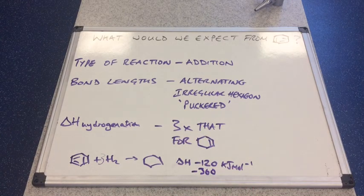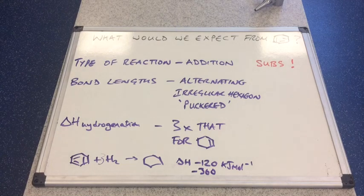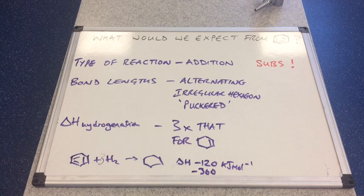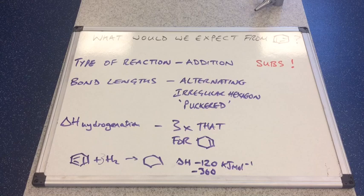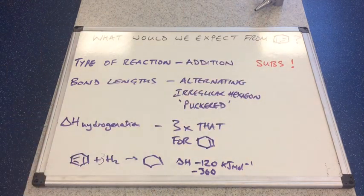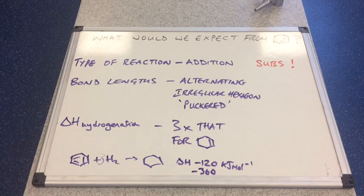Now obviously the way science works is scientists need to provide evidence to back up what they are proposing. So scientists set to work to look at Kekulé's structure and the first thing that they found was that it actually underwent substitution reactions. Benzene didn't undergo addition reactions, it underwent substitution reactions. So that would lead us to think that Kekulé's structure mustn't be right.